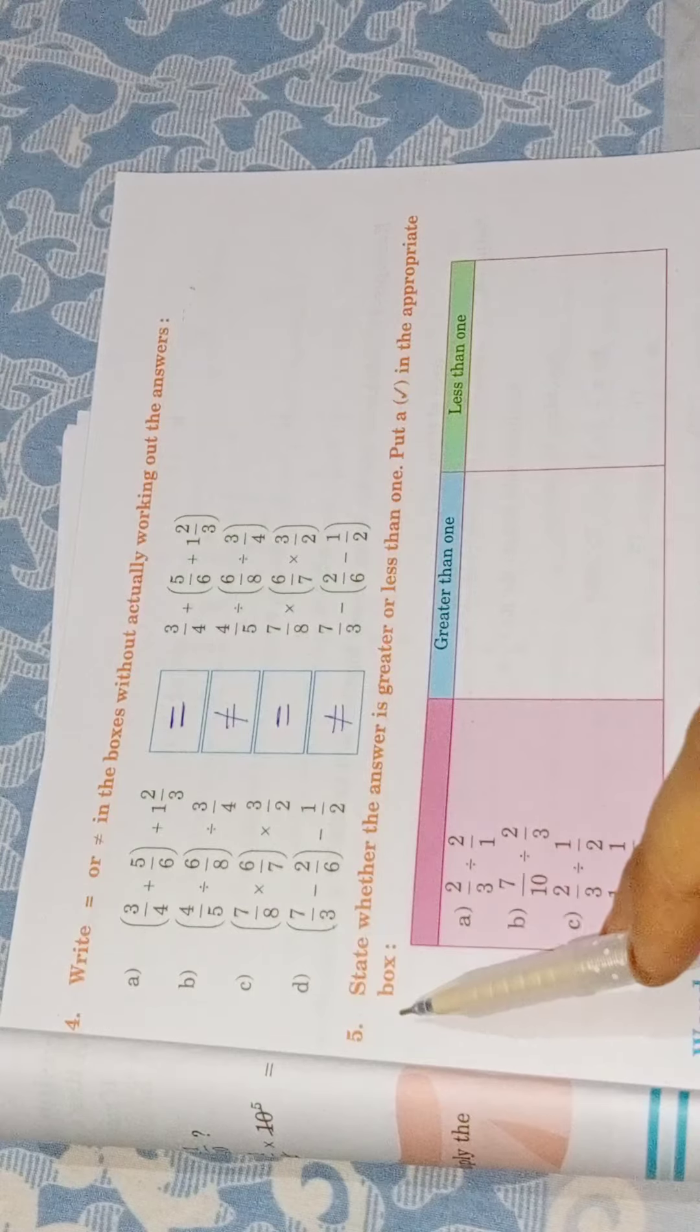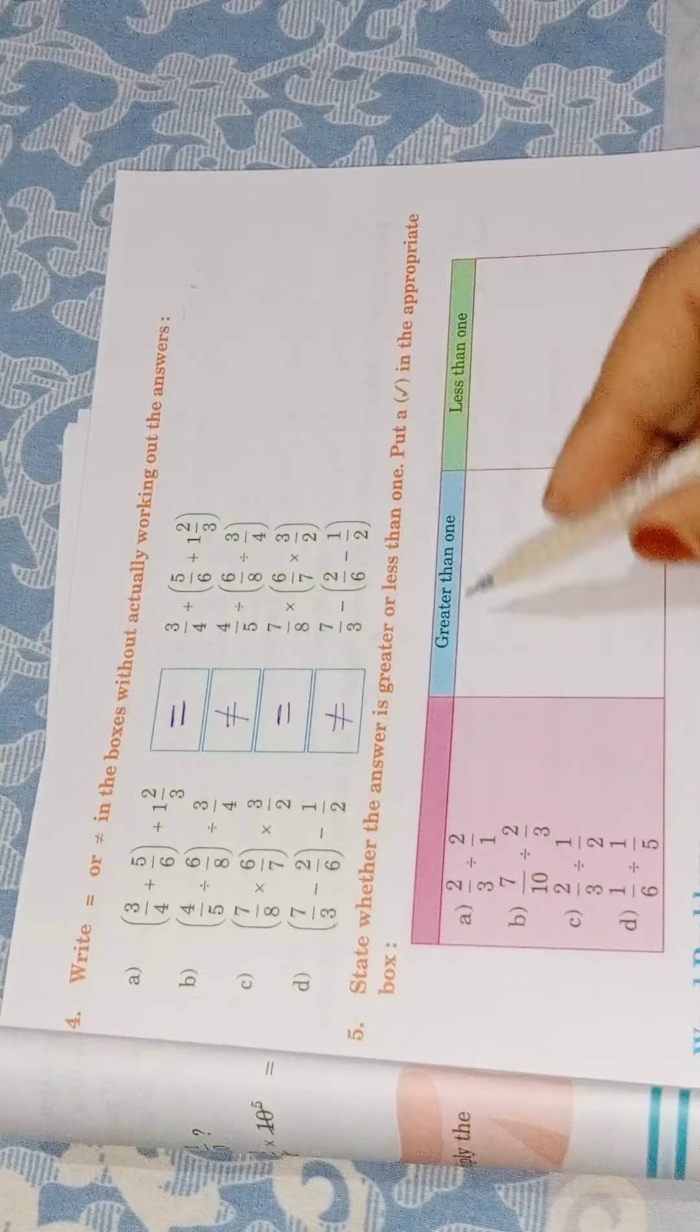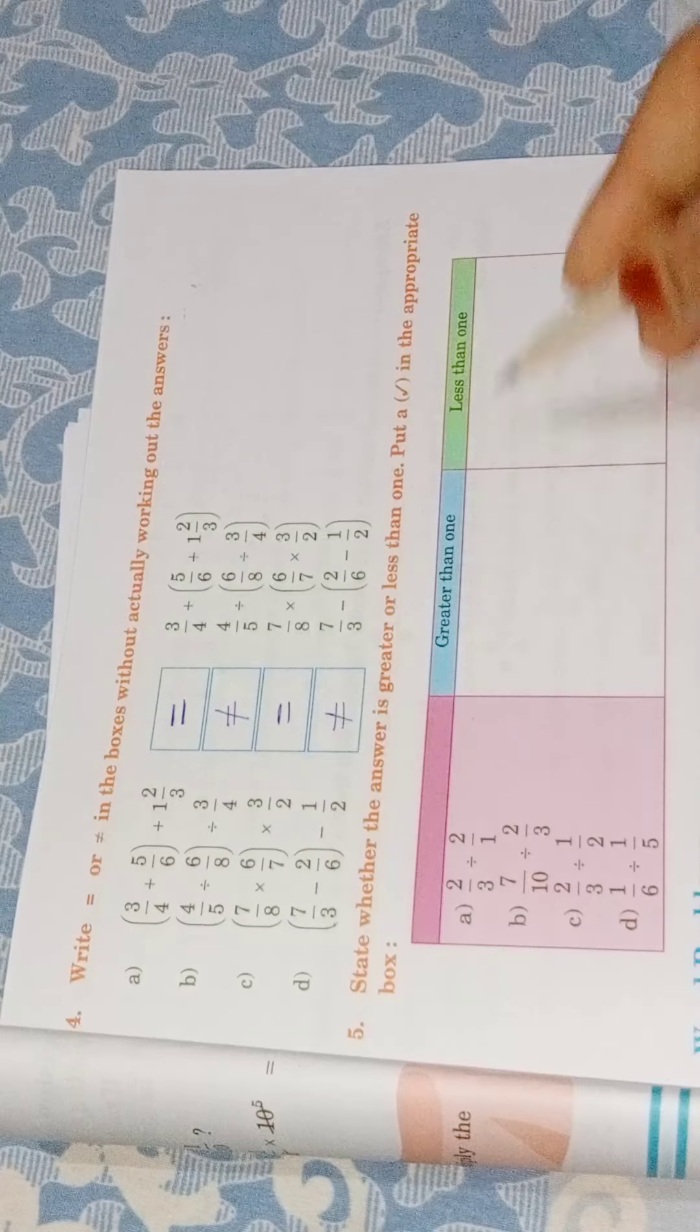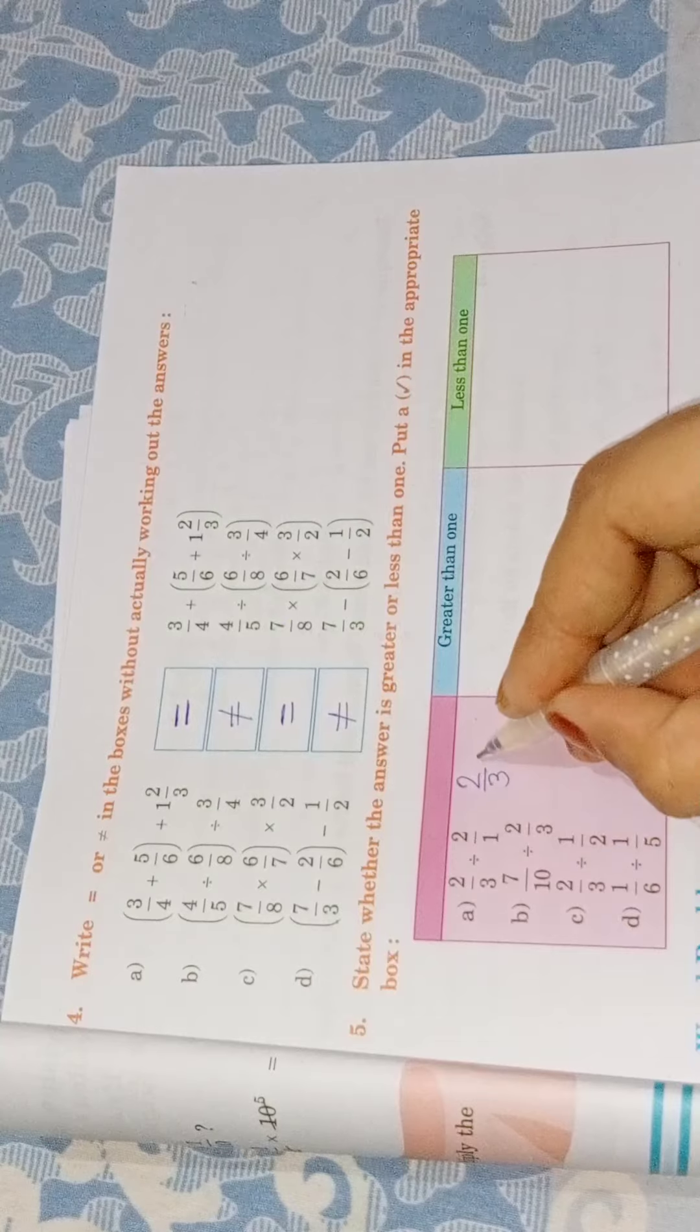We have to tell whether the answer is greater than 1 or less than 1. If it is greater than 1, we will tick on greater than 1, and if it is less than 1, we will tick on less than 1. We will make it, so we have to solve it. Suppose there is 2 by 3.